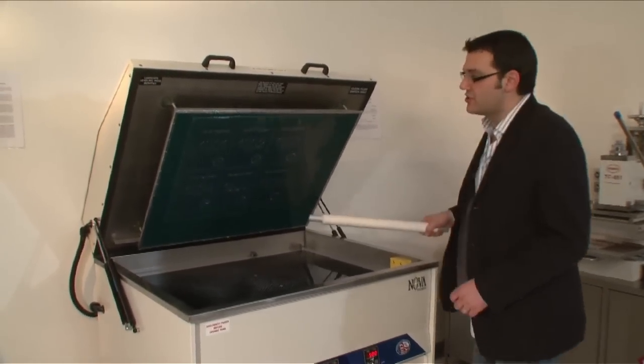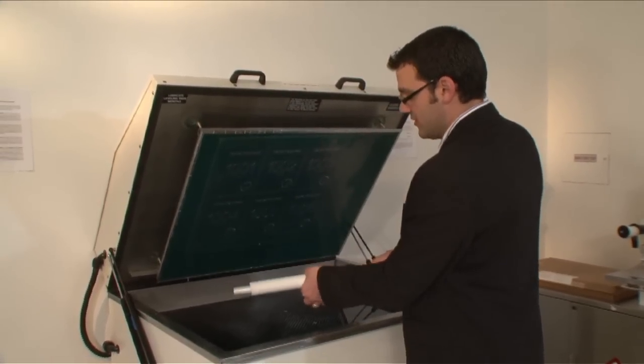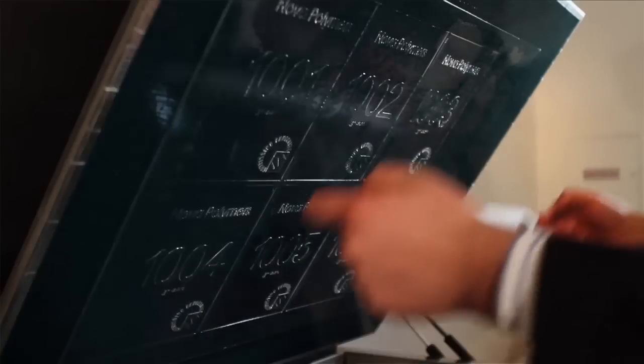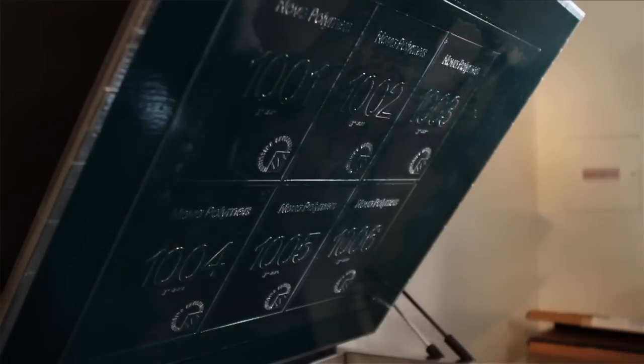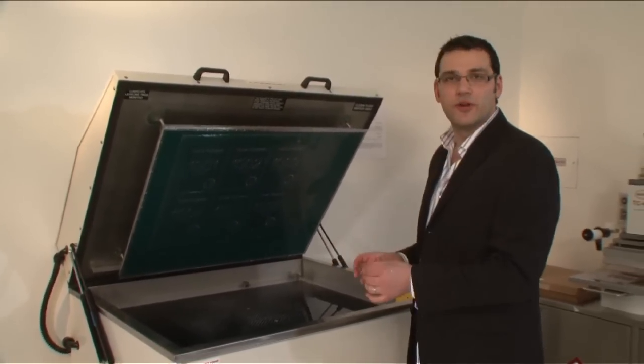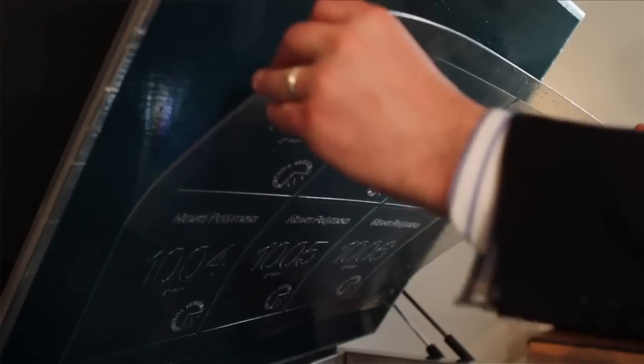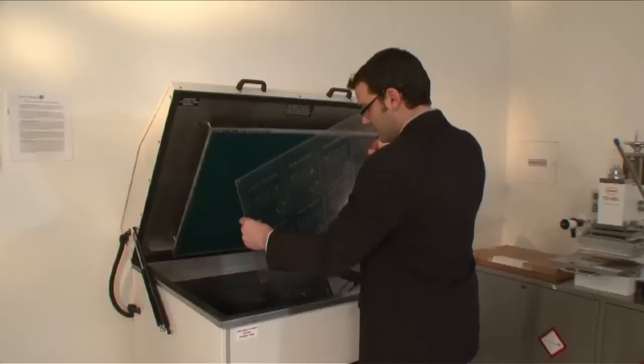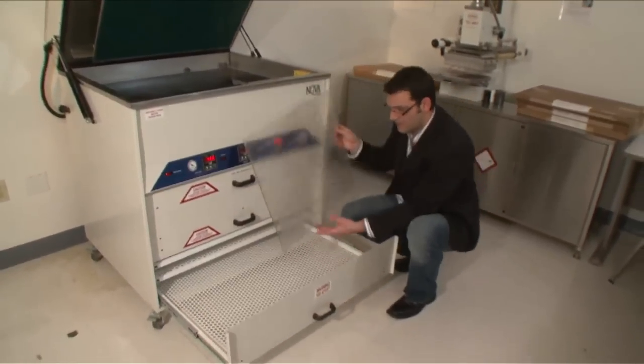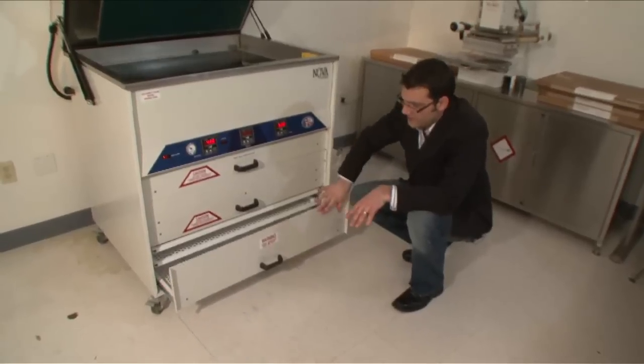Now, in an ideal situation, we would have compressed air so we could blow or evacuate all of the standing moisture off the surface. In this case, we're going to take our urethane roller, just run it across the surface here. Now, the next step is to take the material and to put it in the dryer. Place it face up in the dryer and let it sit in here for 10 minutes.